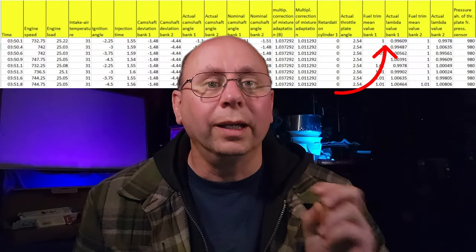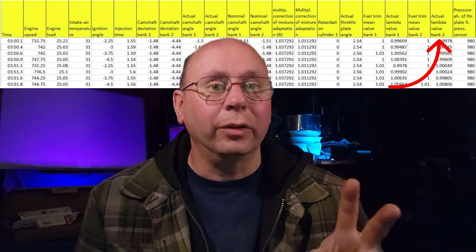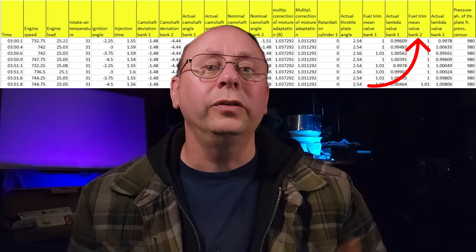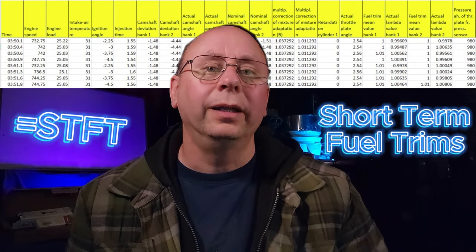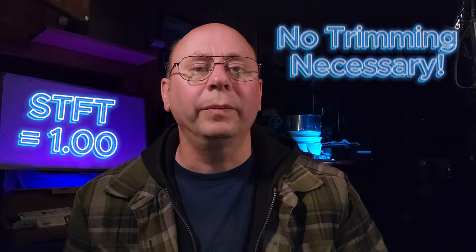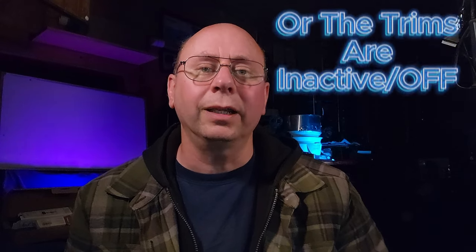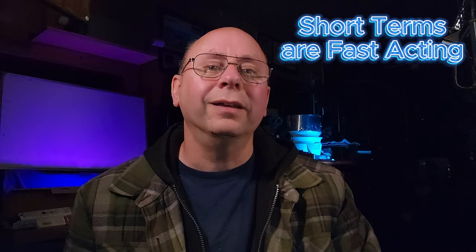Next over are more fueling values: Fuel Trim Mean Value Bank 1 and 2, and Actual Lambda Value Bank 1 and 2. The fuel trim mean values are what you'd normally see called short-term fuel trims in an OBD2 scan tool. A value of 1.00 tells you the ECU is not having to trim the fuel from the base-mapped values to maintain the target lambda. The short terms versus long terms are kind of like short-term and long-term memory — the short terms take immediate care of the trims to maintain the actual lambda according to the target.